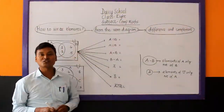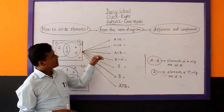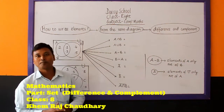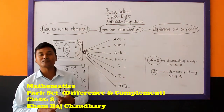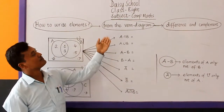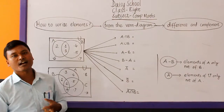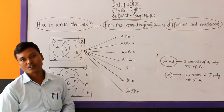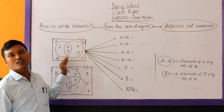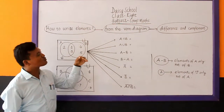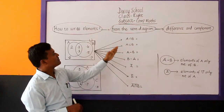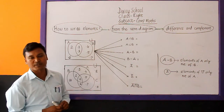Dear listeners, welcome to this video tutorial. Before we start today's item, I must tell you something. Minus 1, we have already completed difference of sets and complement of set. So today, we are reading how to write elements of the given set directly from the given Venn diagram. That means today we are reading how to study the given Venn diagram to write the elements of given set operation directly from the given Venn diagram.